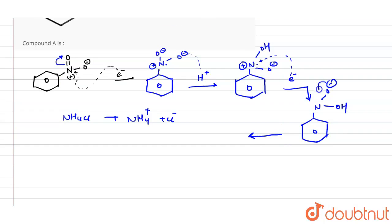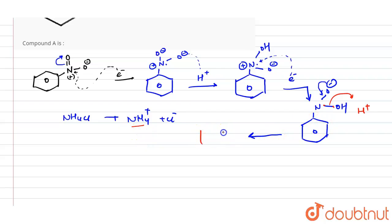In the next step, the negative charge is reversed back, and OH is released. This OH combines with H⁺ — again from the NH4⁺ compound in NH4Cl — so water is released. The compound is now converted into N double bond O (nitroso compound).